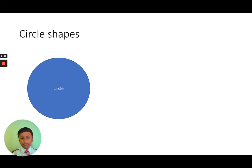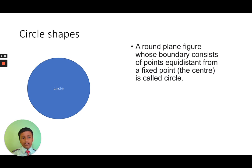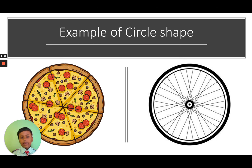Circle shape: A round plane figure whose boundary consists of points equidistant from a fixed point, the center, is called a circle. A circle is round. Examples of circular shapes include pizza and wheels.